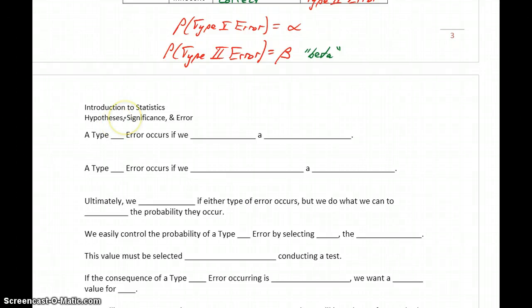In the case of a Type I error, we reject a true null hypothesis. We reject that starting assumption even though in reality it's true. That's the same idea as an innocent person being convicted.